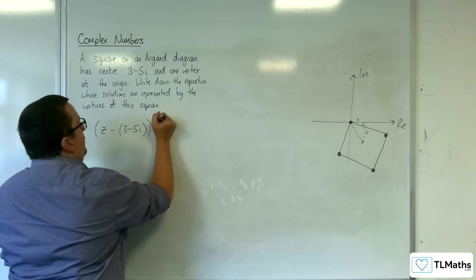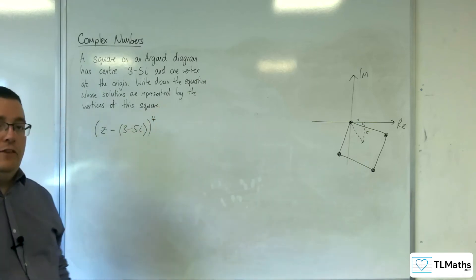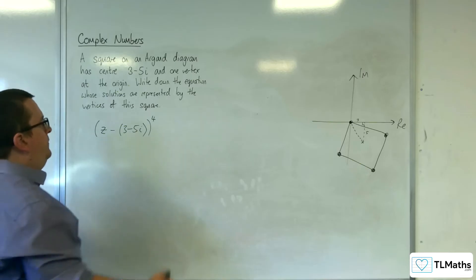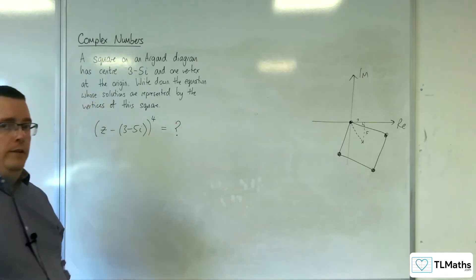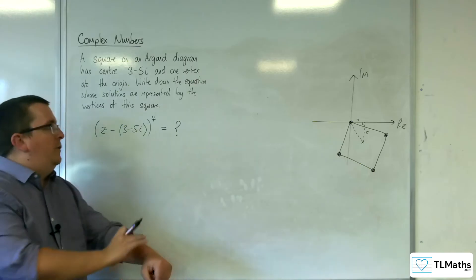We need it to be a square, so 4 sides, and so hence that's got to be to the power of 4. And that's going to be equal to something, and is this something that I need to find. That's the bit that I can't very easily find.